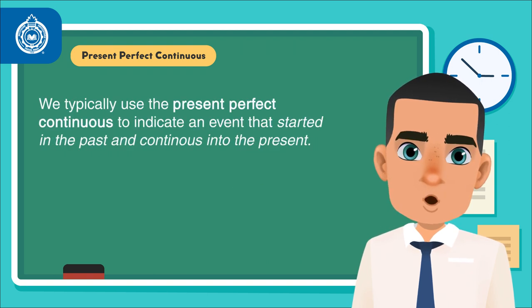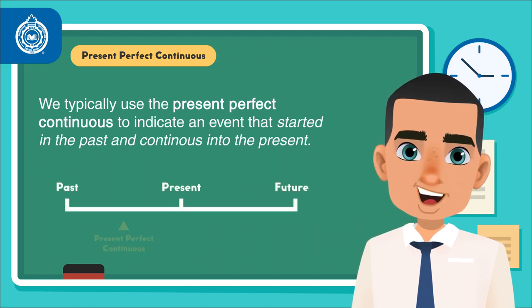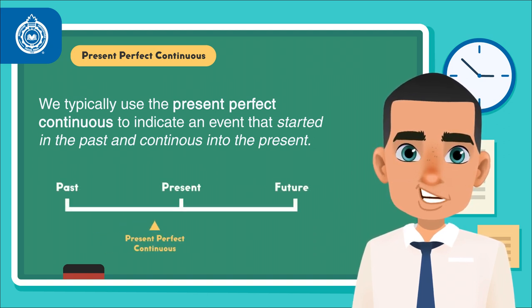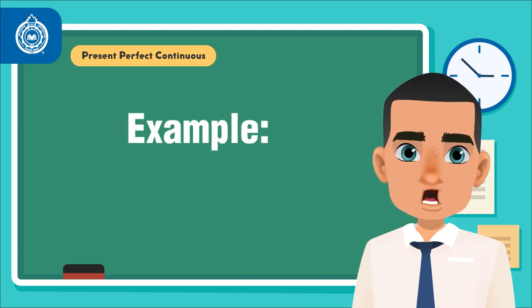We typically use the present perfect continuous to indicate an event that started in the past and continues into the present. Here are some examples.